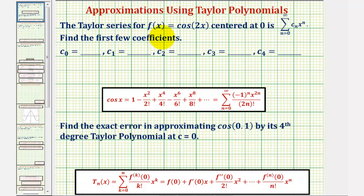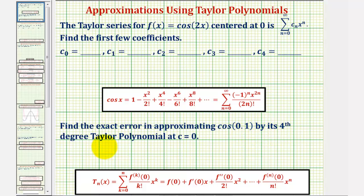The Taylor series for f(x) = cos(2x), centered at zero, is in this form. We want to find the first few coefficients c₀ through c₄, and then find the exact error in approximating cos(0.1) by its fourth-degree Taylor polynomial.